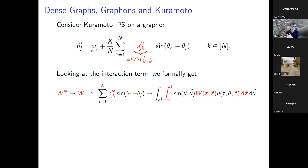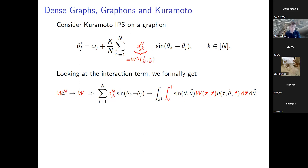Assume this coupling matrix is sampled from a graphon — an L^p function on the unit square — sampled over a grid and evaluated at grid cell centers, giving you your adjacency matrix. Taking this adjacency matrix to a limit is classical graph limit theory by Lovász and collaborators from the mid-2000s. In the large N limit, if N tends to infinity, this may converge to a function W on the unit square — and we use this idea to study large heterogeneous networks.